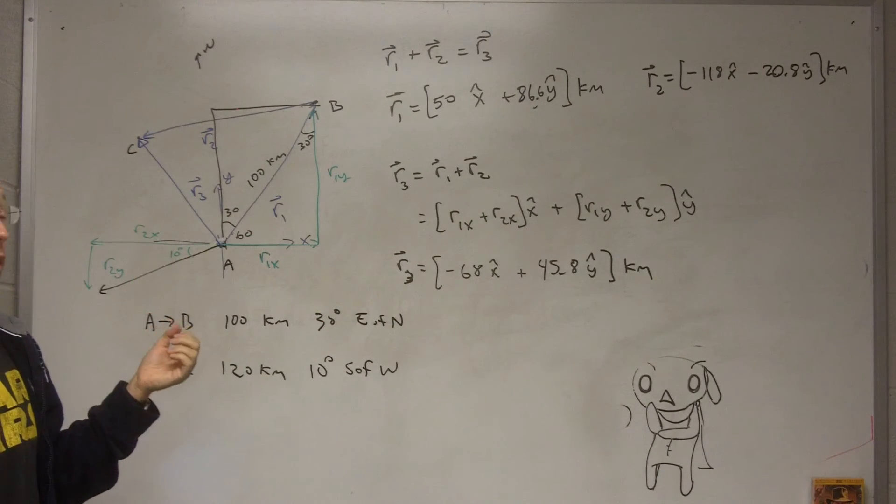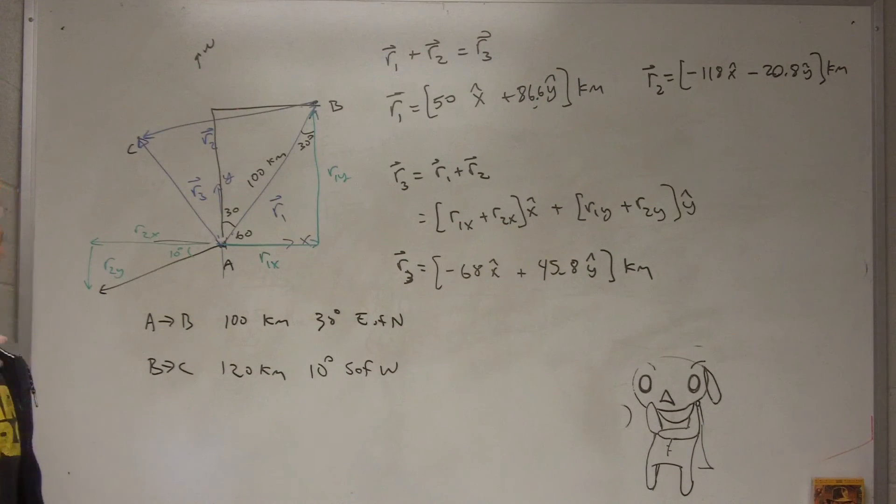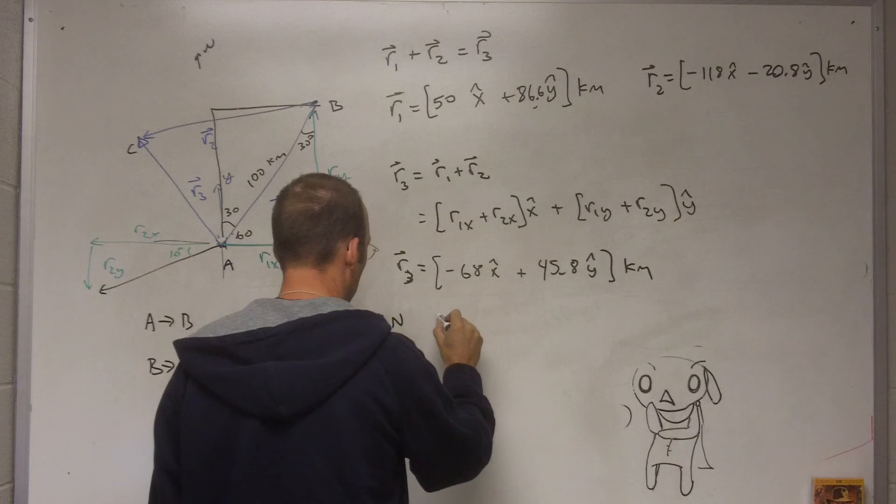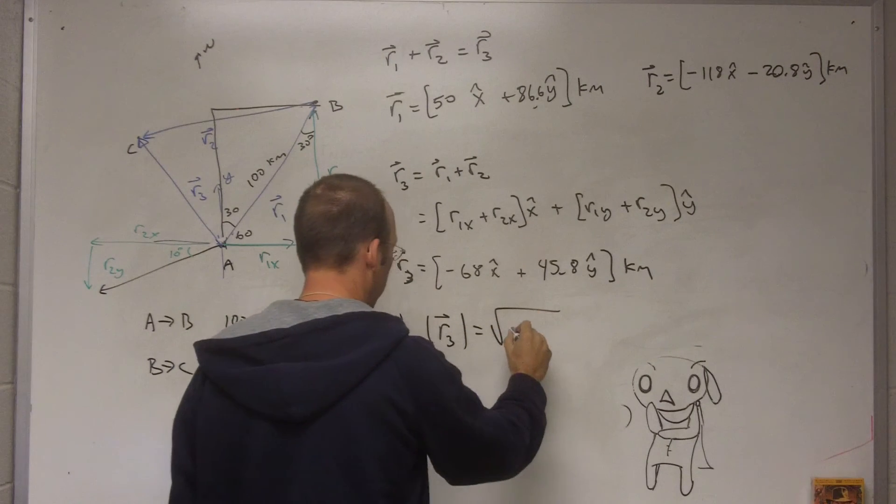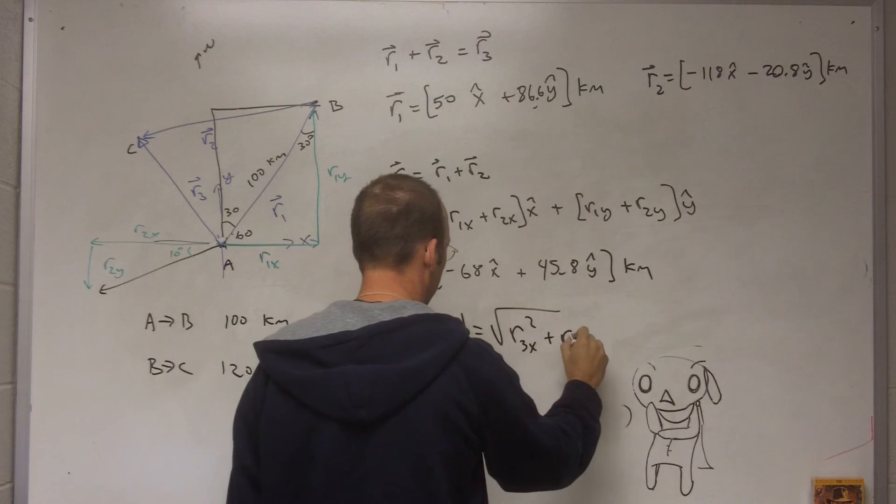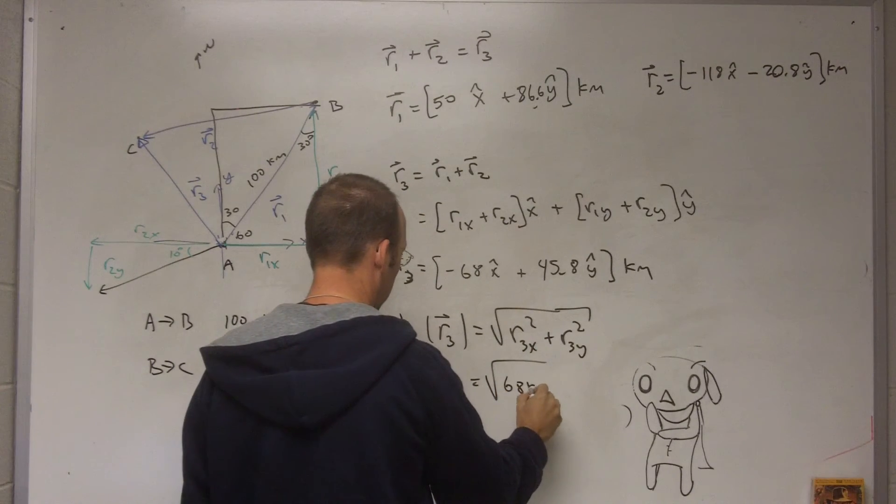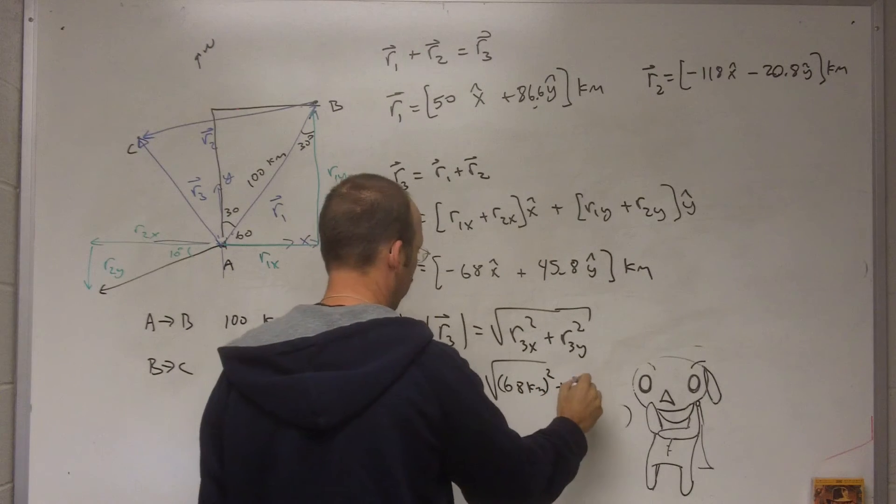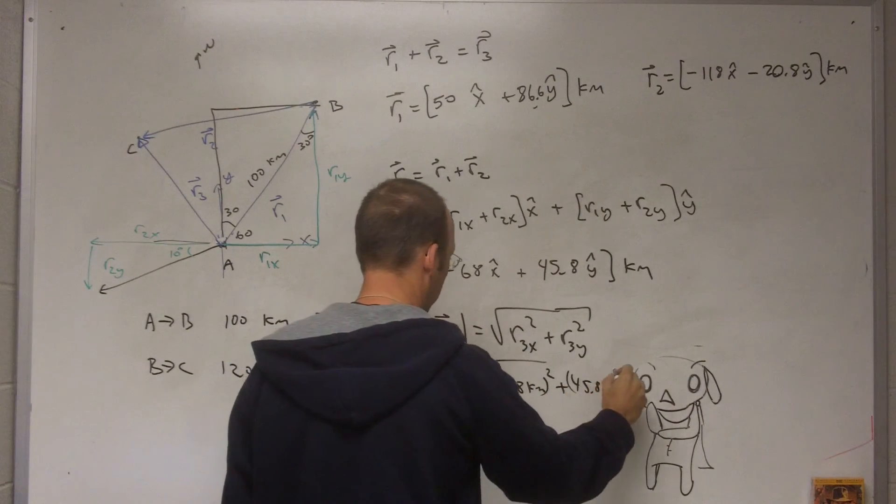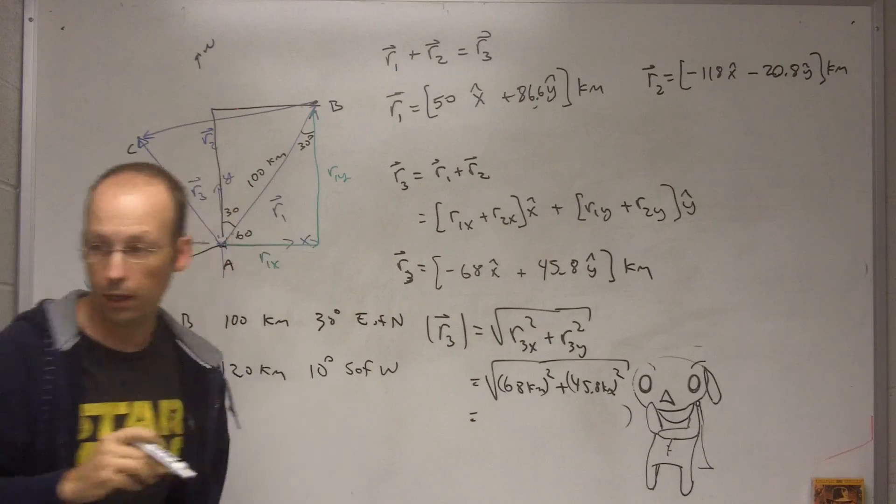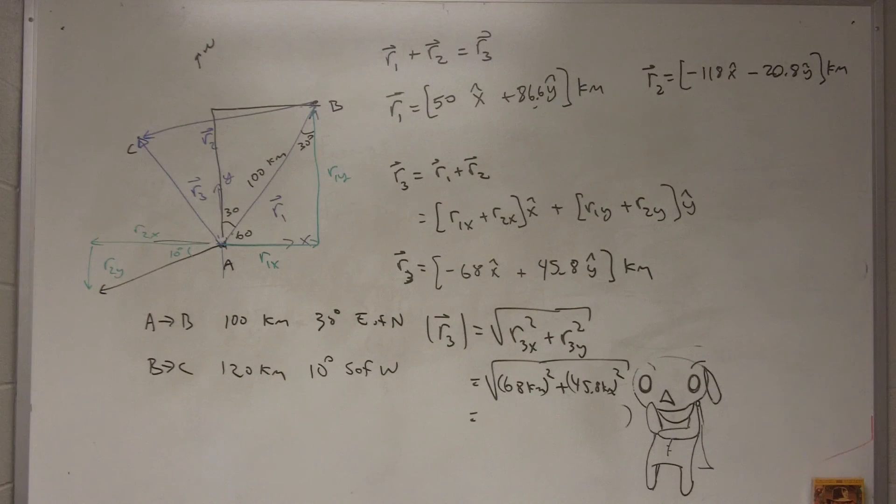But now, let's say I'm flying a plane or I want to give someone the instructions. I need to now say, well, how far is that? So the magnitude of r3 is just going to be the square root of r3x squared plus r3y squared. So that's just going to be 68 kilometers squared plus 45.8 kilometers squared, and then take the square root. And I get, let's say 68, 45.8, and I get 81.9, let's just call it 82.